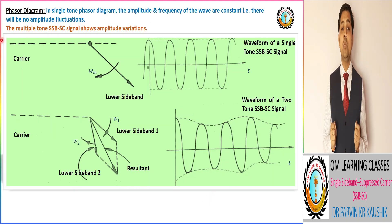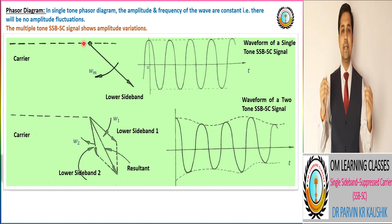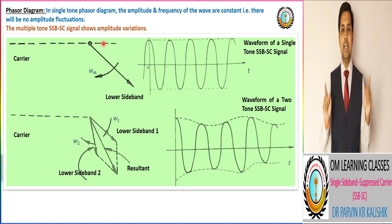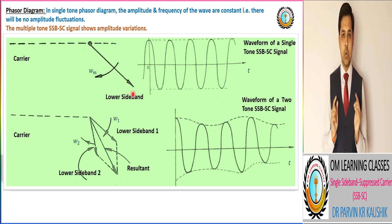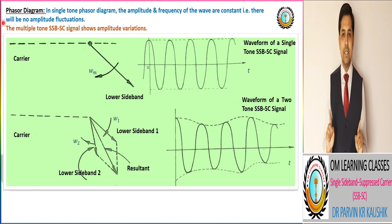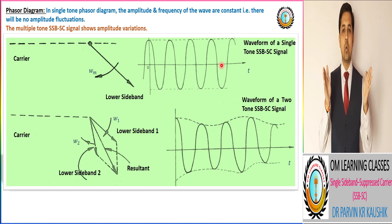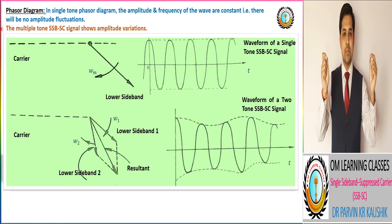Now we have the phasor diagram of SSB-SC modulation technique. Using the same convention as in DSB-SC, the carrier signal corresponds to a horizontal dotted line, representing the absence of the carrier signal. In SSB-SC, only one sideband is present. In the diagram, we take the LSB sideband. So in the phasor diagram for a single-tone signal, only one lower sideband exists, rotating clockwise at its angular frequency ω. Amplitude variation can also be observed in SSB-SC signal.